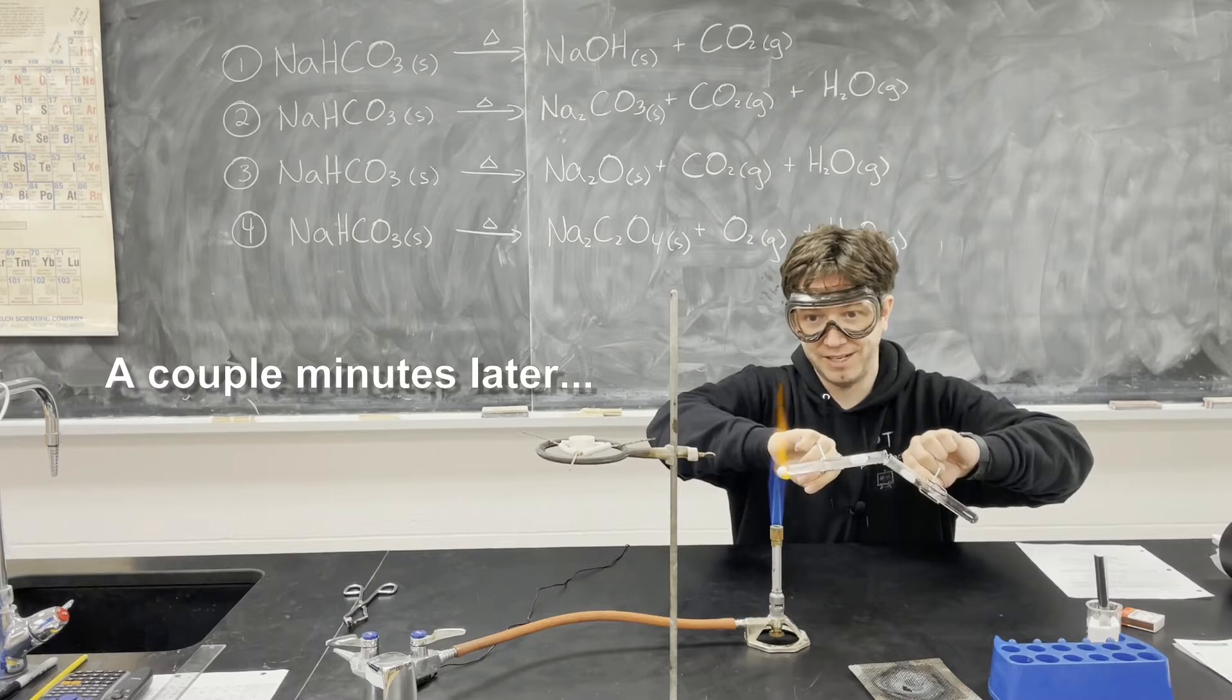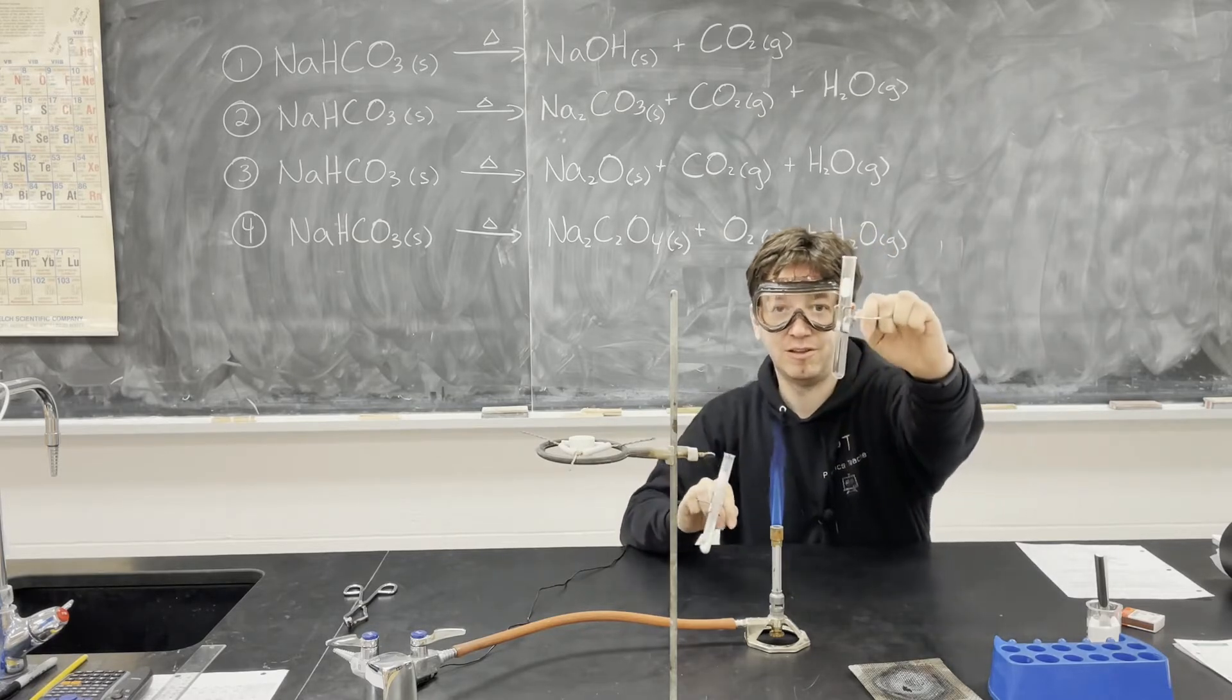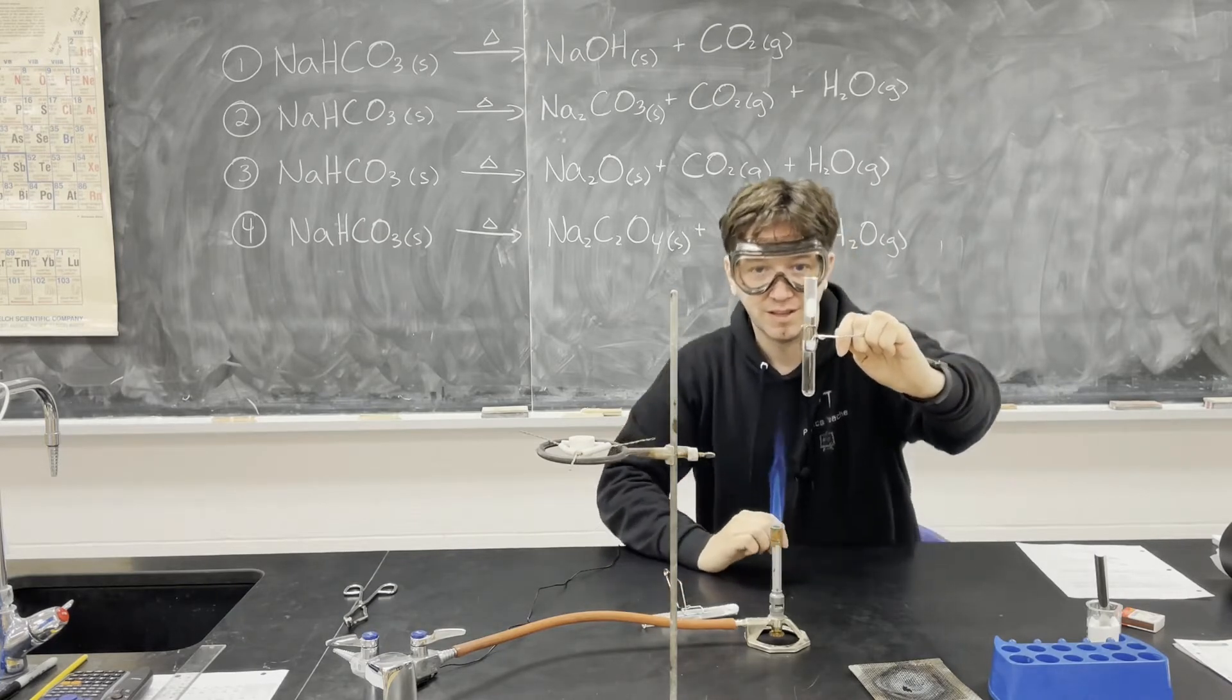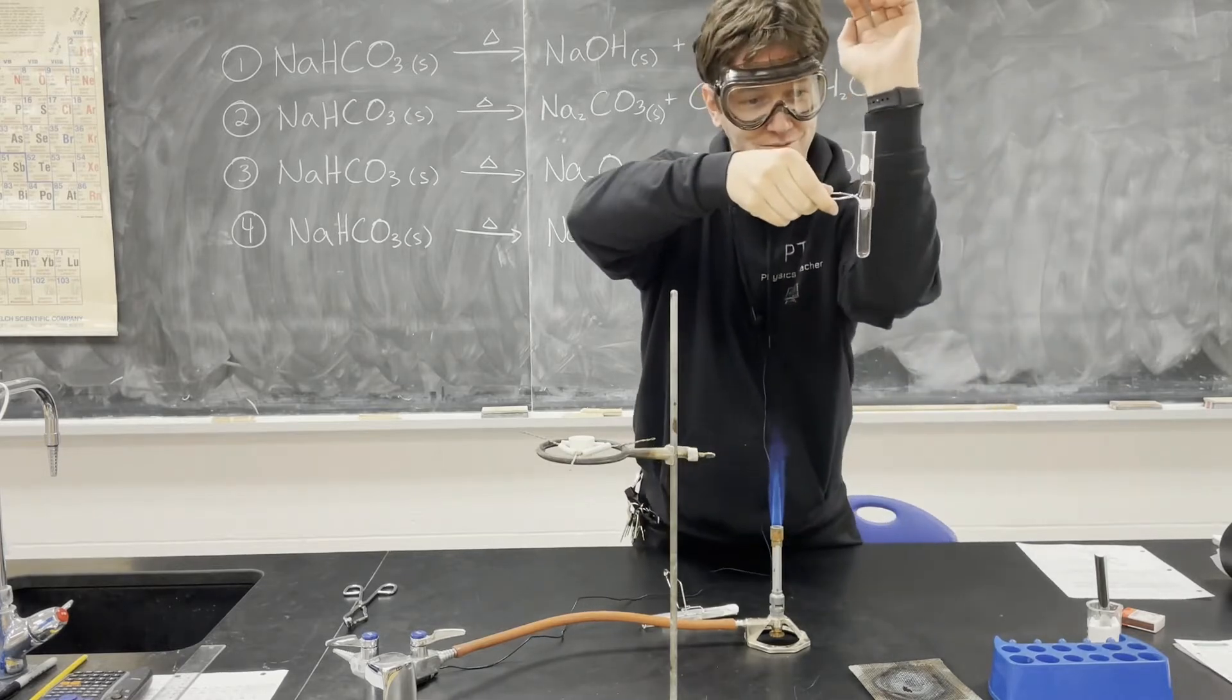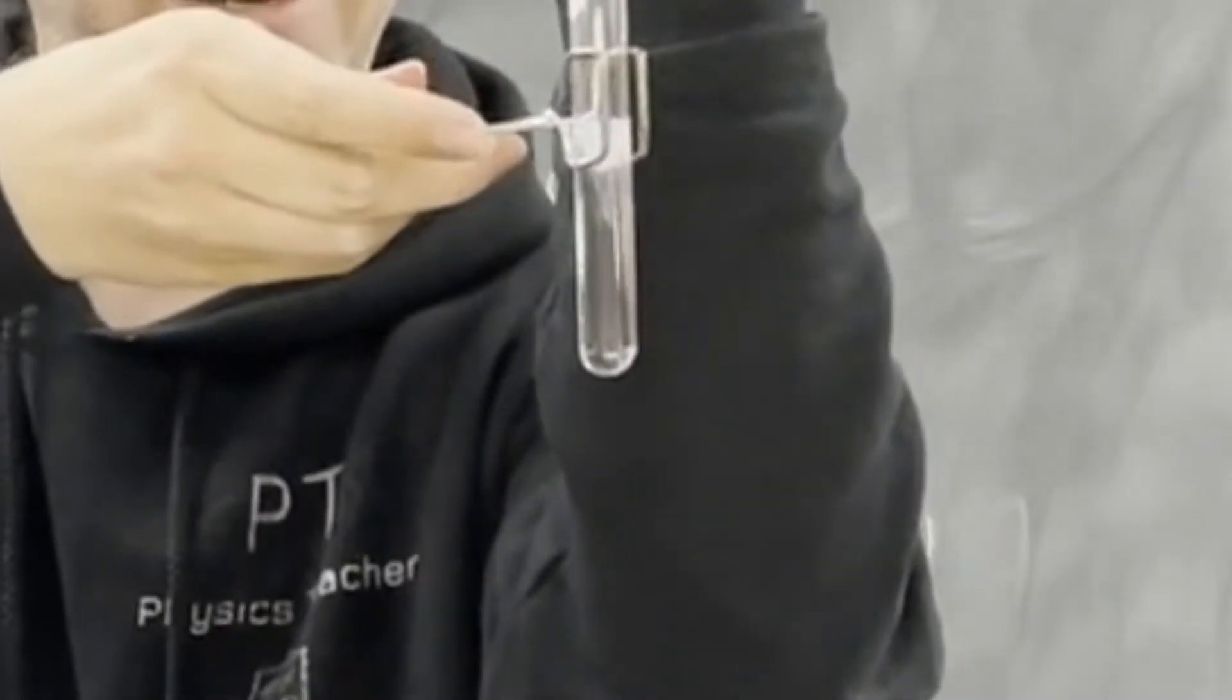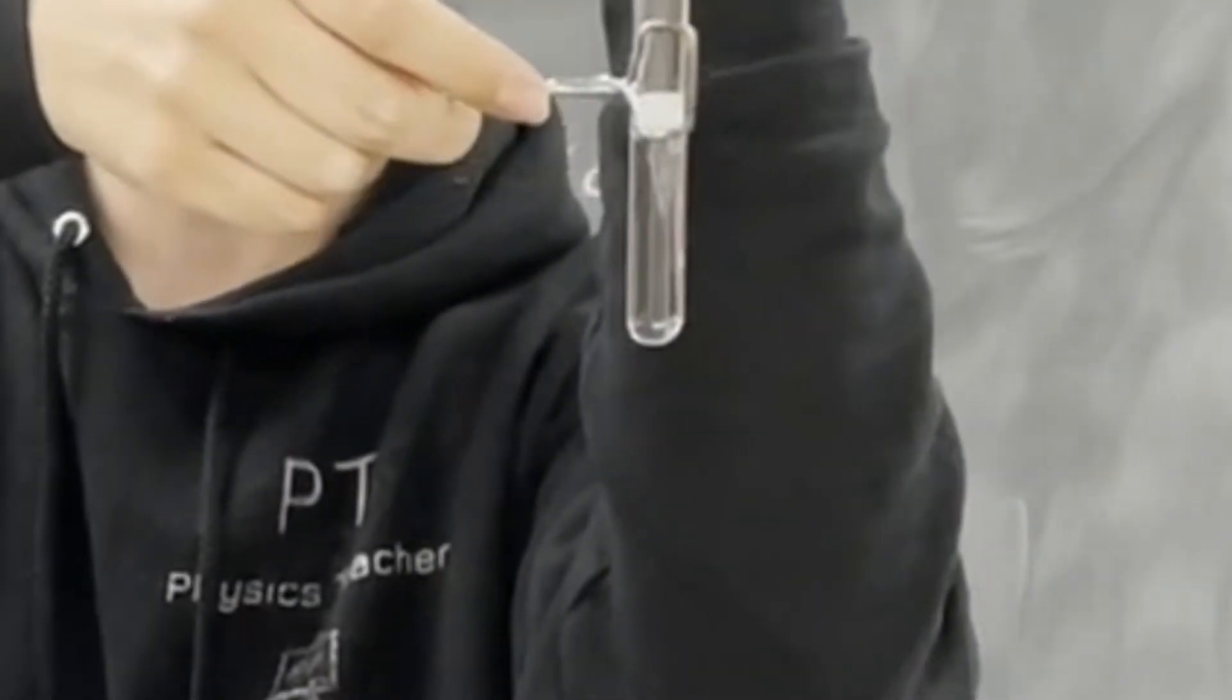All right, let's see if we get a precipitate. Three, two, one. All right, there you go. It may be easier to see against my black shirt, but you can see the swirls forming as it goes down, so we got a slightly clouded color of a precipitate.